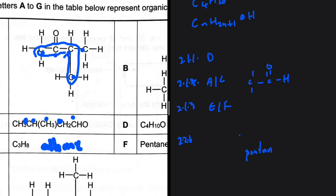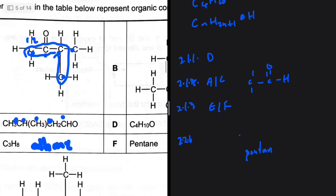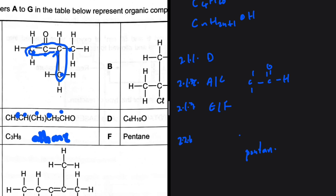We have to start numbering our carbons from the side closest to the functional group. Starting from the bottom: one, two, three — so we start numbering from the left. The double bond oxygen will be on the second carbon, giving us pentan-2-one. Then we have a branch on the third carbon, so that would be 3-methylpentan-2-one.